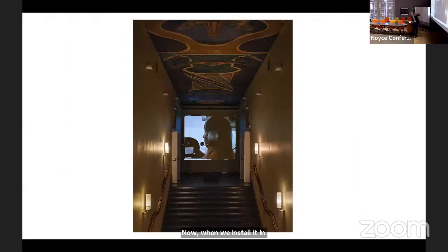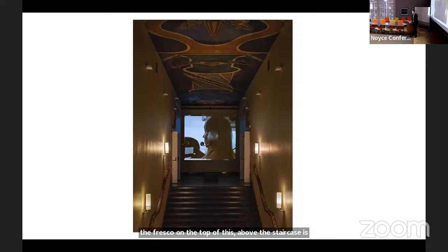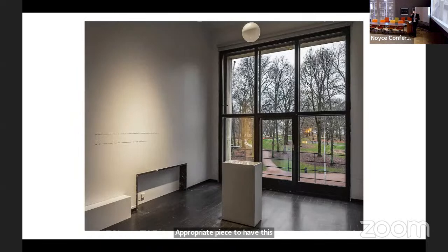In Tegel, though obviously the reference is less traumatic, it's also about nebulously mapping the tracks and traces of a vanished history — an airspace devoid of planes. When we installed it at Kunstnernes Hus, we placed it at the top of the main staircase with Susan's voice spilling down. By happy coincidence, the fresco above that staircase is by Norwegian artist Per Krogh and is called 'The Artist's Thorny Ascent to the Heavens' — a very appropriate piece to have Phillips's work underneath.